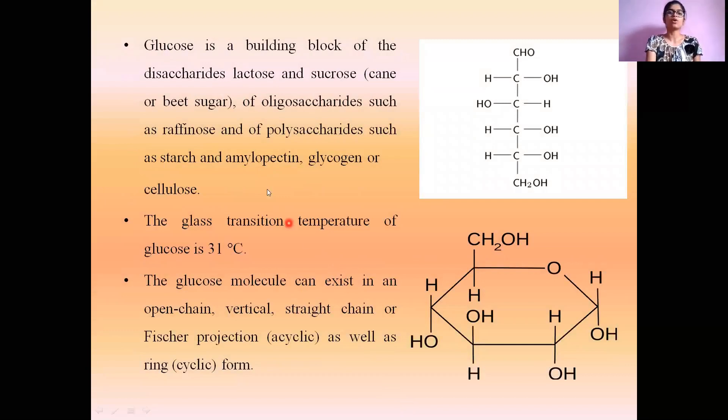Glucose is the building block of disaccharides lactose and sucrose, and also for oligosaccharides such as raffinose and polysaccharides such as starch, amylopectin, glycogen, or cellulose. The glass transition temperature of glucose is 31 degrees Celsius.